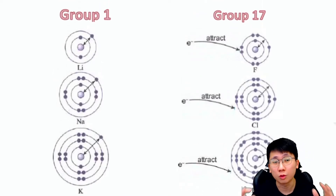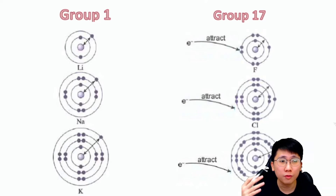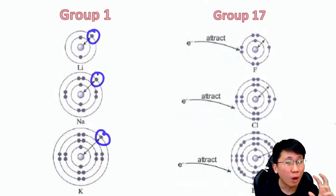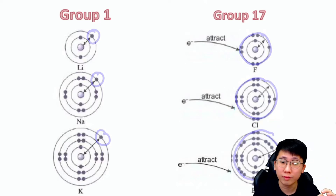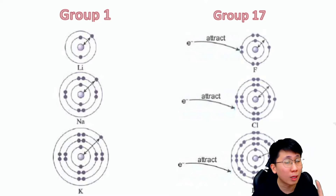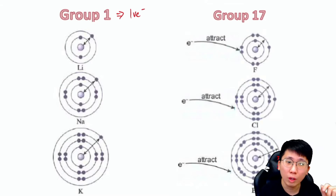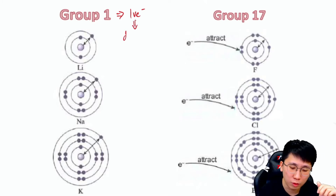Group 1 elements each have one valence electron, while Group 17 elements have seven valence electrons in their outermost shell. Because Group 1 has only one valence electron, what it wants to do to achieve a stable octet or duplet electron arrangement is to donate that electron.